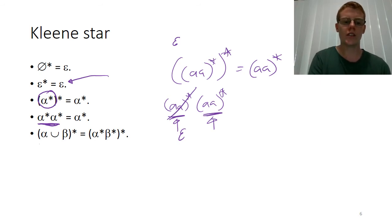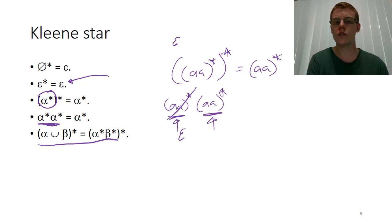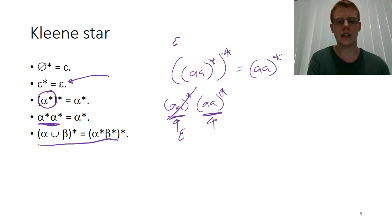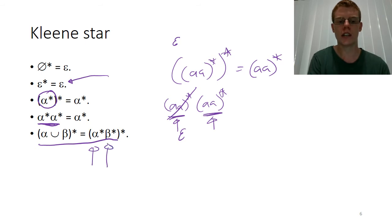Also, the union of two regexes all Kleene-starred is just the first regex Kleene-starred concatenated with the second regex Kleene-starred, all Kleene-starred. And that can be useful sometimes, as we'll see.